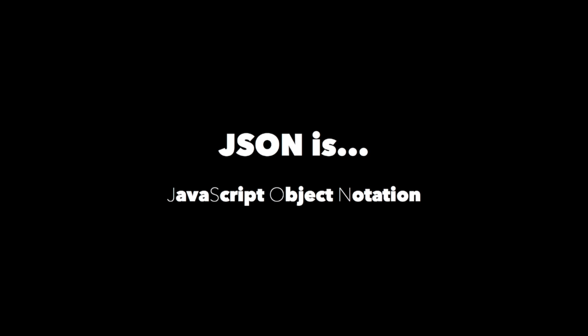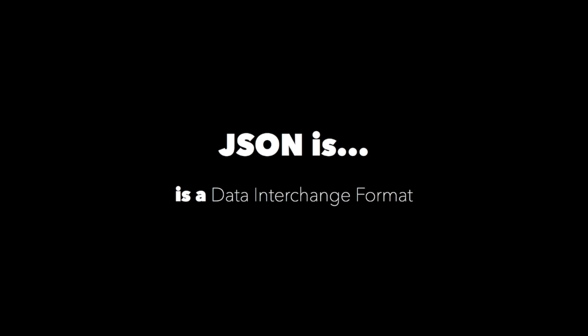First, JSON stands for JavaScript Object Notation. Don't worry about the name for now. What does matter is that it's based on JavaScript, so it uses conventions that are similar to other C family languages like C, Java, Perl, and many, many others. This makes it a good candidate for a data interchange format.